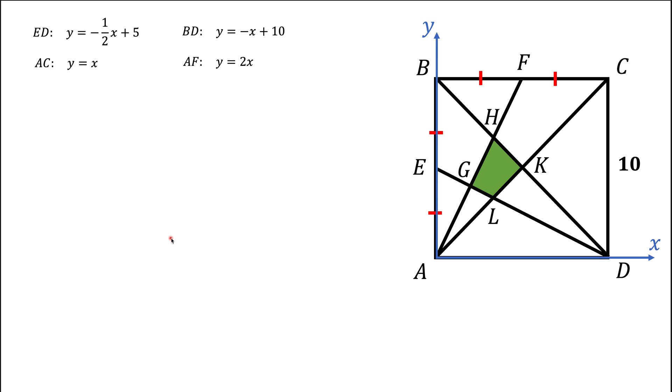Alright, now we've found all the equations for all the lines, and now we would like to find coordinates of this point G, H, K, and L. So let's start with point L. As you can see, point L is the point of intersection of the line AC and line ED. So coordinates of this point, x and y, are coordinates that we can obtain by solving a system of these two equations.